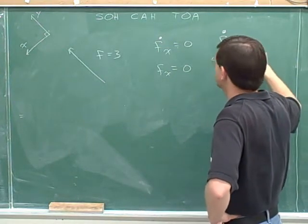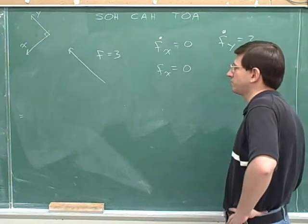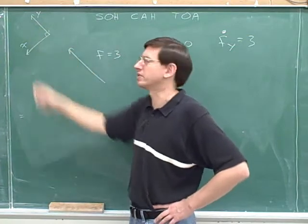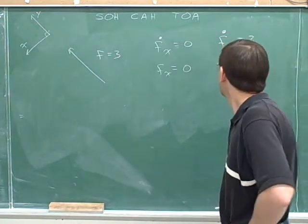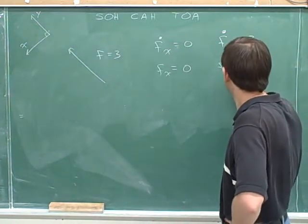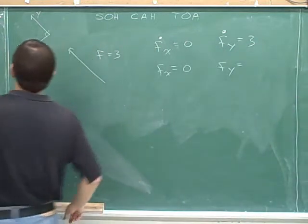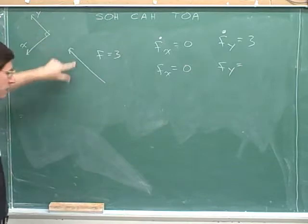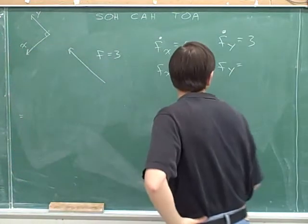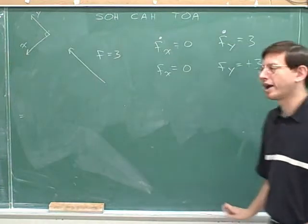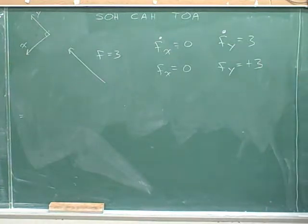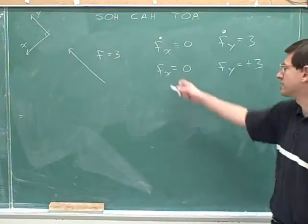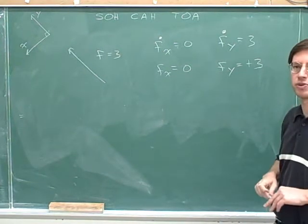We'll start with the magnitude. Clearly, the magnitude of the y-component is 3 — the entire length of the vector represents the y-component with a length of 3. But we're not done until we figure out the signed component. Our y-axis was pointing up and to the left, and the overall vector is also pointing up and to the left. So the y-component is positive 3. We've broken this vector into components: there's no x-component, and the y-component is positive 3.